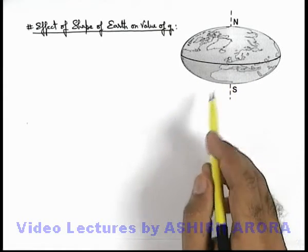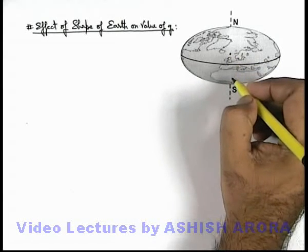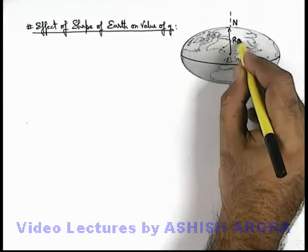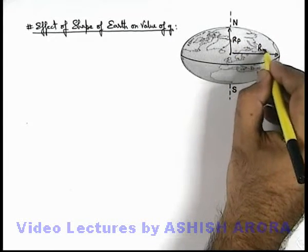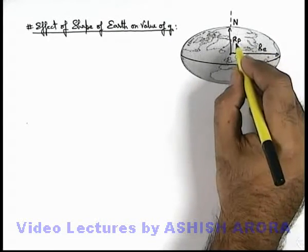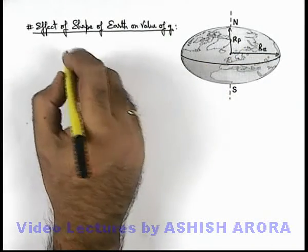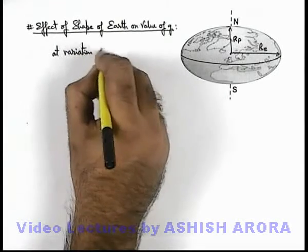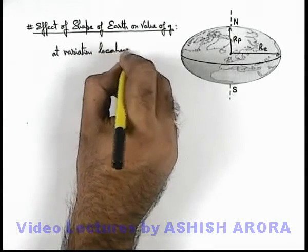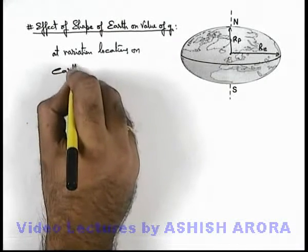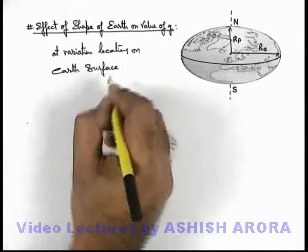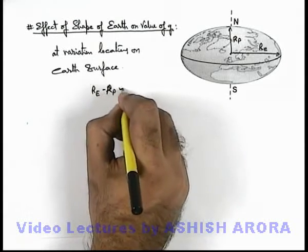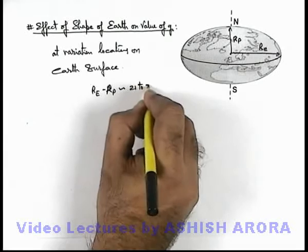If we talk about the radius of earth, then at poles the radius of earth is r-p and at equator its radius is r-e. Then r-e is more than r-p. At various locations on earth surface, the value of r-e minus r-p varies from twenty-one to thirty-four kilometers from different points on equator.